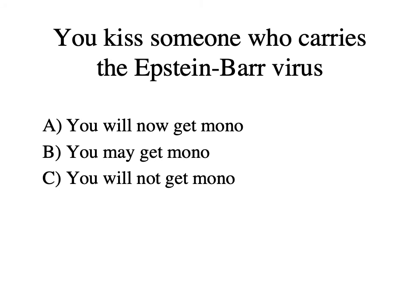Question: If you kiss someone who carries the Epstein-Barr virus, A — you will get mono, B — you may get mono, C — you will not get mono. The answer is B — you may get mono, or you may not. A large number of us already carry the virus asymptomatically in a lysogenic state. Something has to trigger the virus to enter the lytic state, such as being immunocompromised or under significant stress. It's not simply a 'kissing disease' as it has long been called.